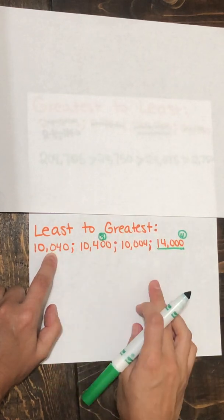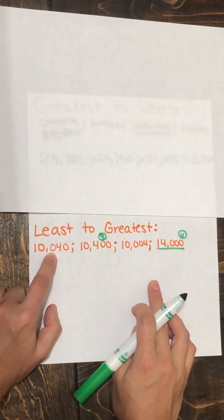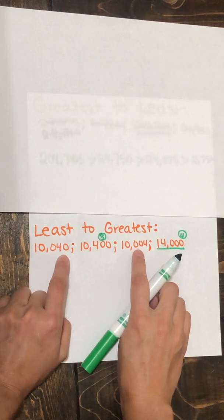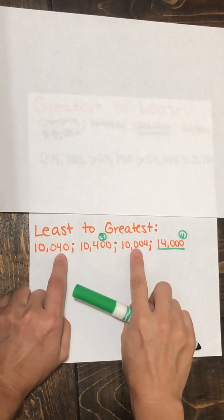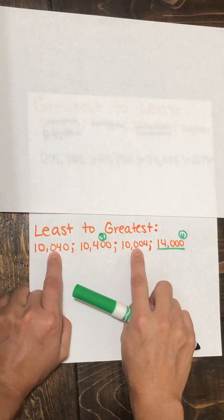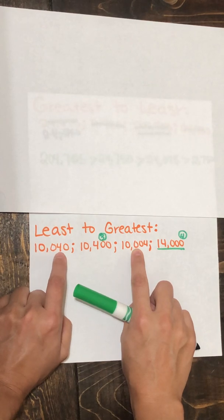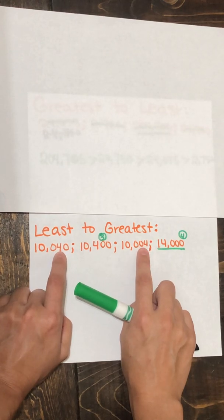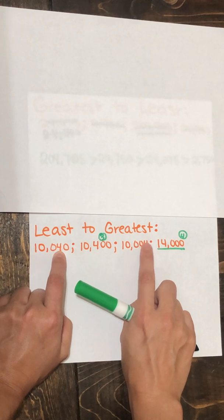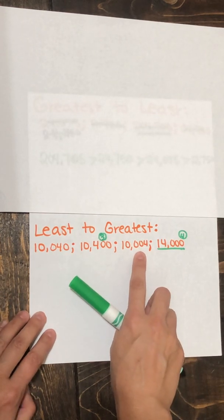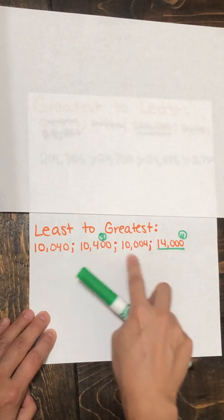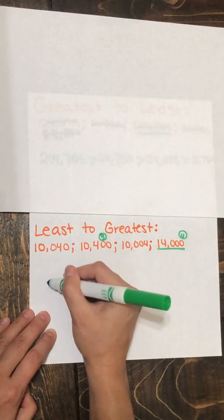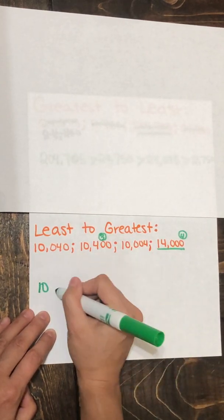But I still don't know my smallest number yet and that's the one I have to start with. But I have narrowed it down to these two. So I had a 0 and a 0 in the hundreds place. That did not help me. Now I have a 4 and a 0 in the tens place. Which one of these would be the smallest? Do you want a 4 in the tens place with a value of 40 or a 0 in the tens place with a value of 0? So we know that this is our smallest number, 10,004.